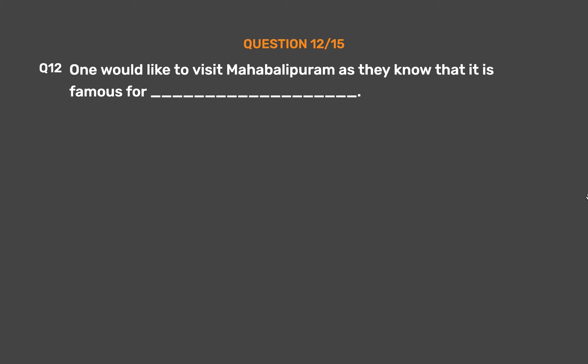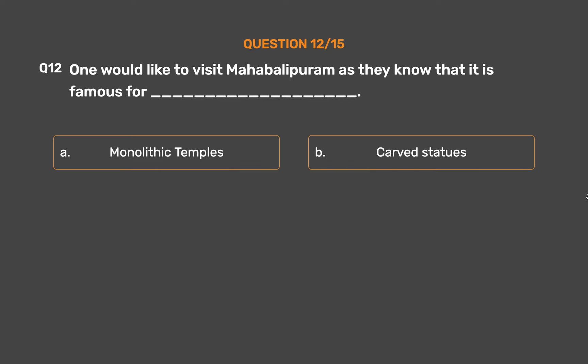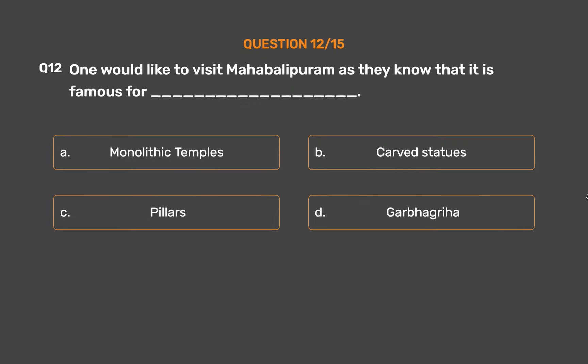Question No. 12. One would like to visit Mahabalipuram as they know that it is famous for: Option A: Monolithic temples. Option B: Carved statues. Option C: Pillars. Option D: Garbha Griha.